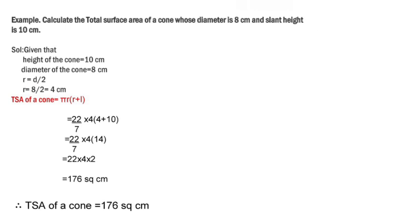See one example: calculate the total surface area of a cone whose diameter is 8 centimeters and slant height is 10 centimeters. They give diameter, but we need radius. Radius equals half of the diameter. Given slant height l equals 10 centimetres, diameter equals 8 centimetres, so r equals d/2 equals 8/2 equals 4. Our formula is πr(l + r). Pi value is 22/7 into r equals 4 into (4 + 10). So 4 + 10 is 14, and 7 divides into 14 giving 2. So 22 into 4 into 2 — doing the multiplication we get 176. Therefore, TSA of a cone equals 176 square centimetres.